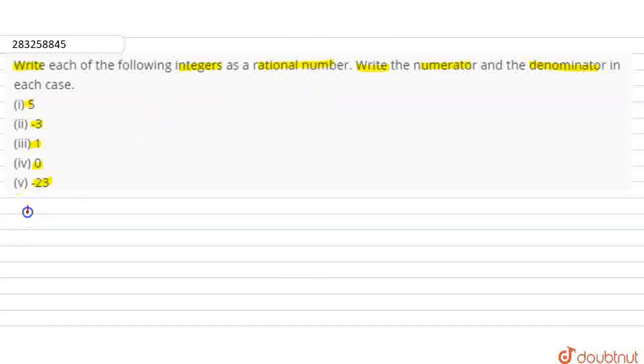Here we will see how to write it. First we have 5. If we write 5 over 1, that is 5 by 1, then there will be no difference. So we have written it in P by Q form where P is 5 and Q is 1. The numerator is 5 and denominator is 1.